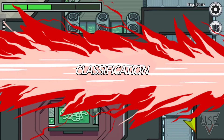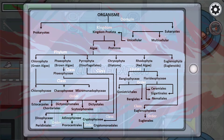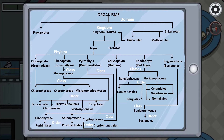Next is the classification for algae. We have made a taxonomy chart, beginning with the domain for algae all the way to its order. All organisms are divided into two domains, which are prokaryotes and eukaryotes. Algae is under the domain eukaryotes. Eukaryotes are then divided into unicellular and multicellular, and algae is under unicellular. Under unicellular is the kingdom protista, which is divided into algae and protozoa.